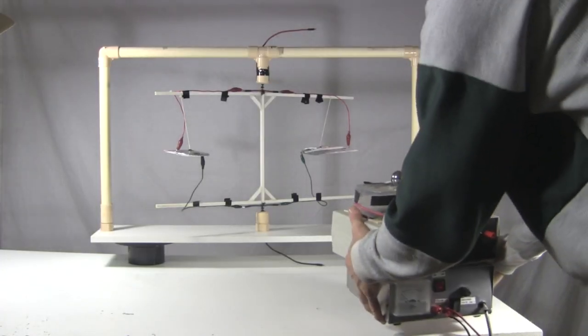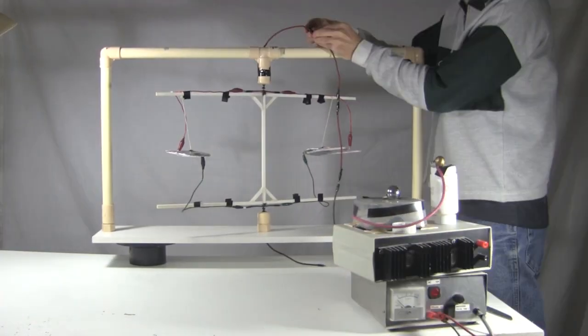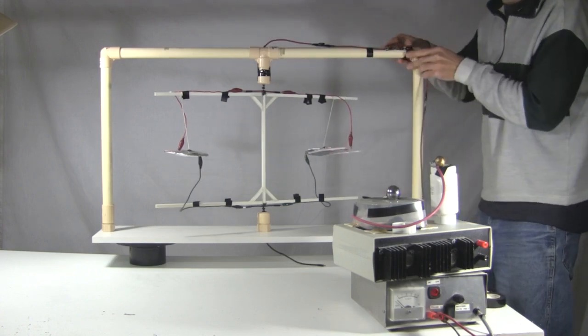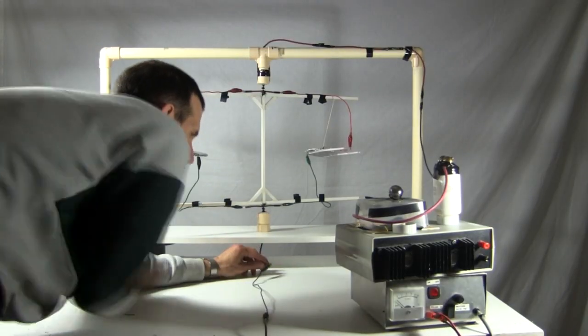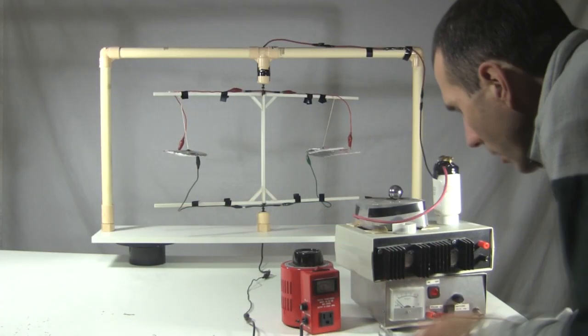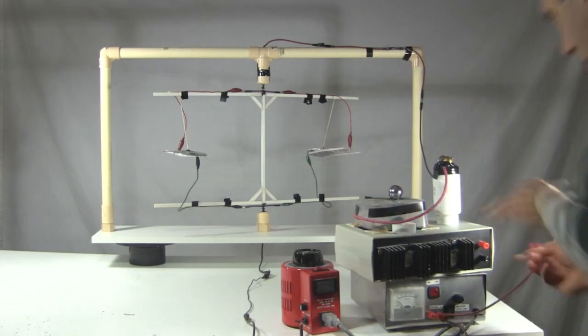I bring out my homemade high voltage power supply. I connect the top wires to the high voltage positive output of the power supply. And then the bottom wires to earth ground. I bring out my variac and make the final connections.